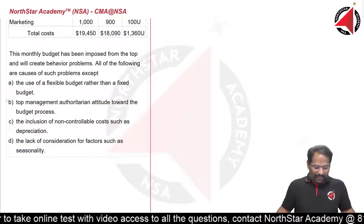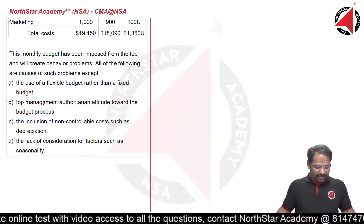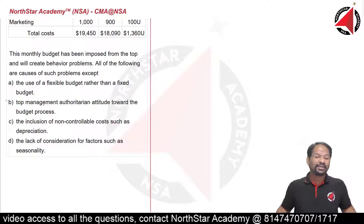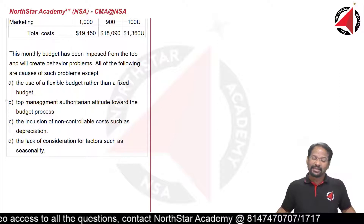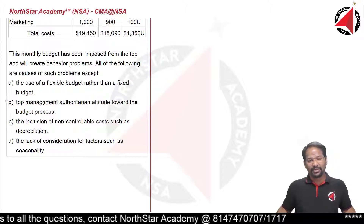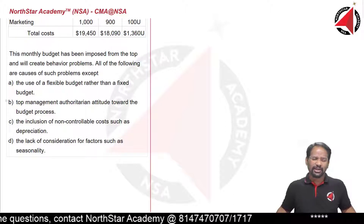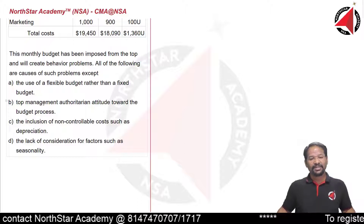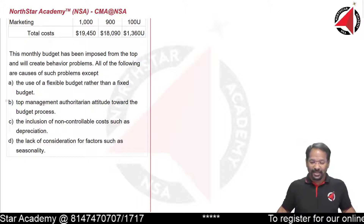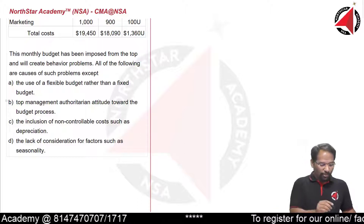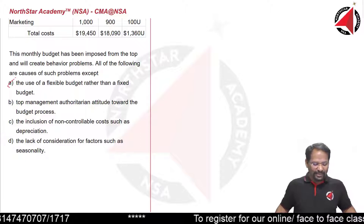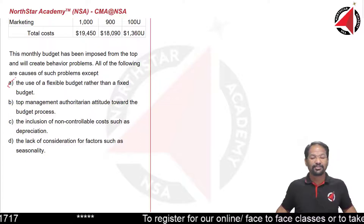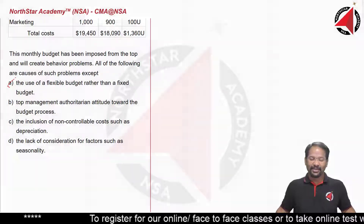The last option: the lack of consideration for factors such as seasonality. The budget should always consider seasonality as an important factor, because if we divide budgets just by 12, we are not taking into account seasonal changes. So the correct answer is option A — the use of a flexible budget rather than a fixed budget, which is what has been used in this question. Thank you.